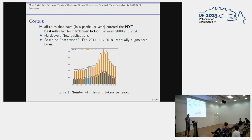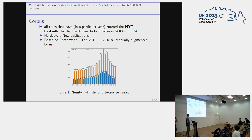The corpus consists of New York Times bestsellers from 2000 to 2020. A title is assigned to a year if it entered the bestseller list that year. There was an existing dataset on Data World covering February 2011 to July 2018, and we extended it to the full 20-year timeframe by manual selection — Taylor went through the NYT bestseller list and copied every title. We're looking at hardcover fiction, meaning new publications. We have a couple hundred titles per year, up to about a thousand tokens, for a total of around 4,000 titles.